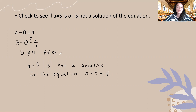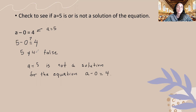Just to quickly recap what we did here: we're checking the possible solutions of this equation. We're given a is equal to five as a value to plug into this equation. We simplified it, carried out our operation which was subtraction, and we saw that the left hand side of the equation is not equal to the right hand side. So a is equal to five is not a solution of the equation. That will be our approach for the next questions. Go ahead and jot this down so that we can move on.